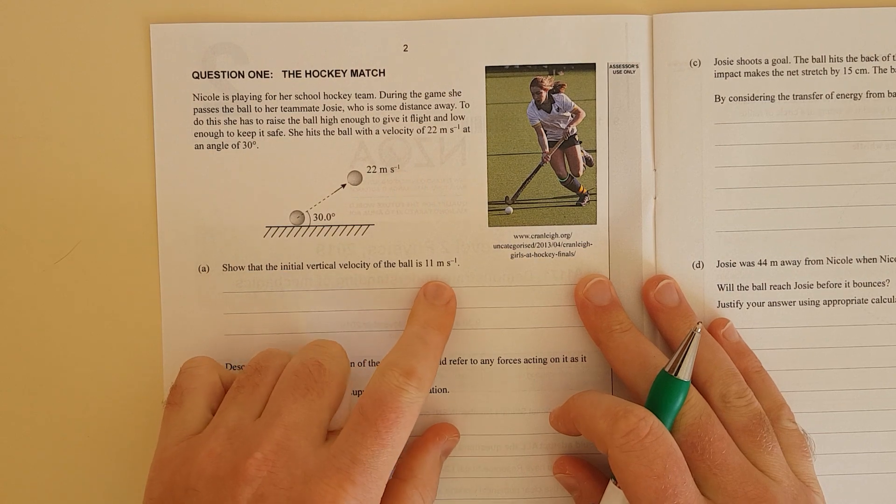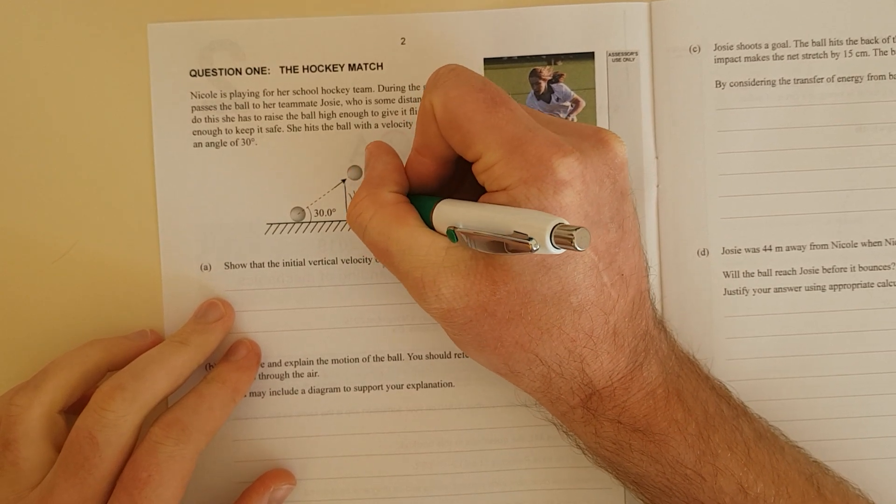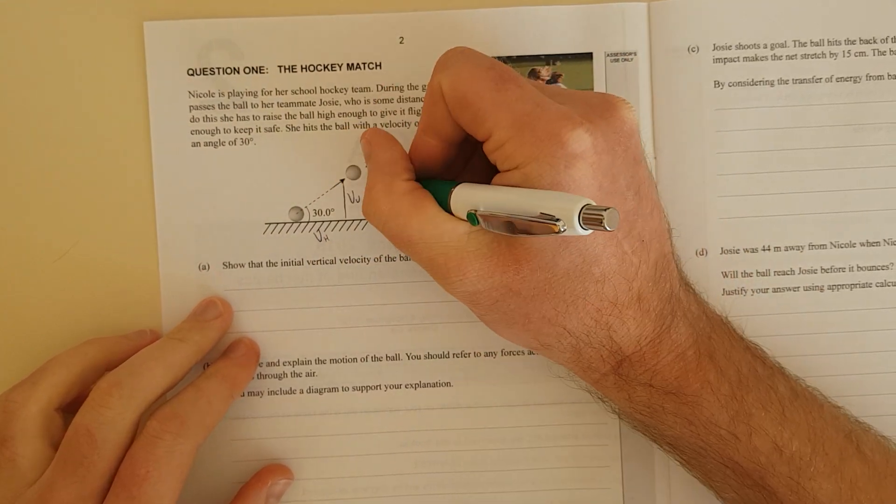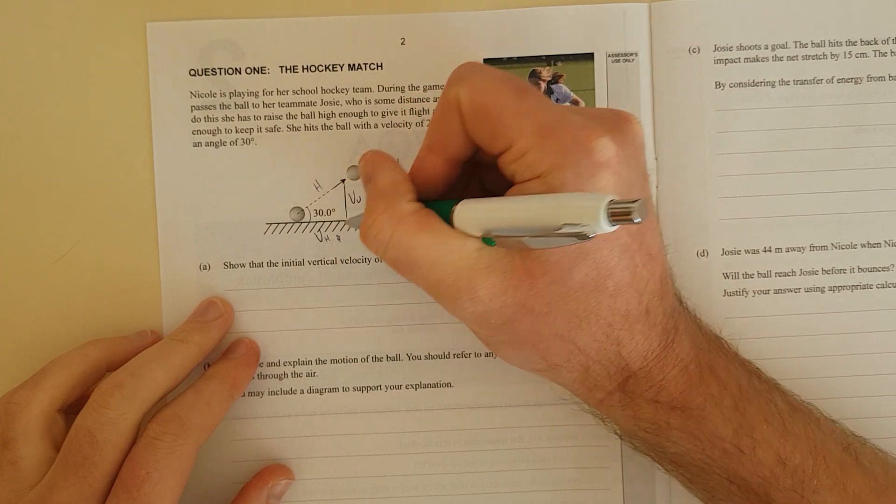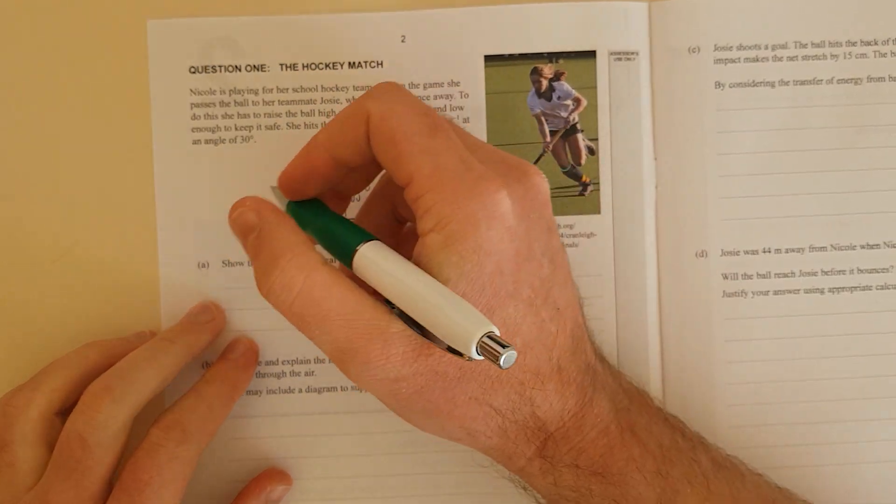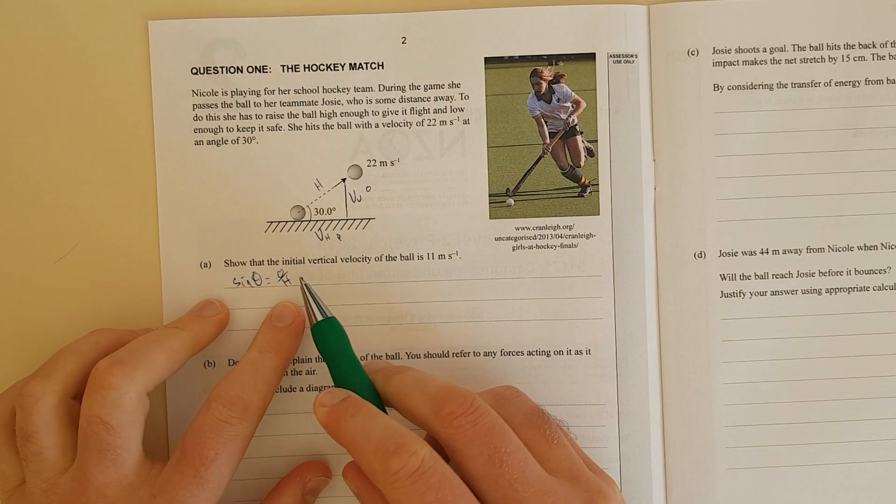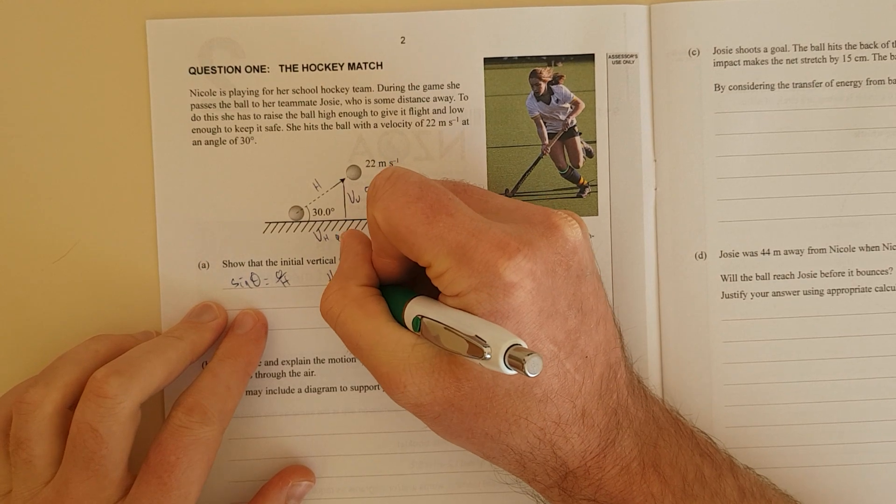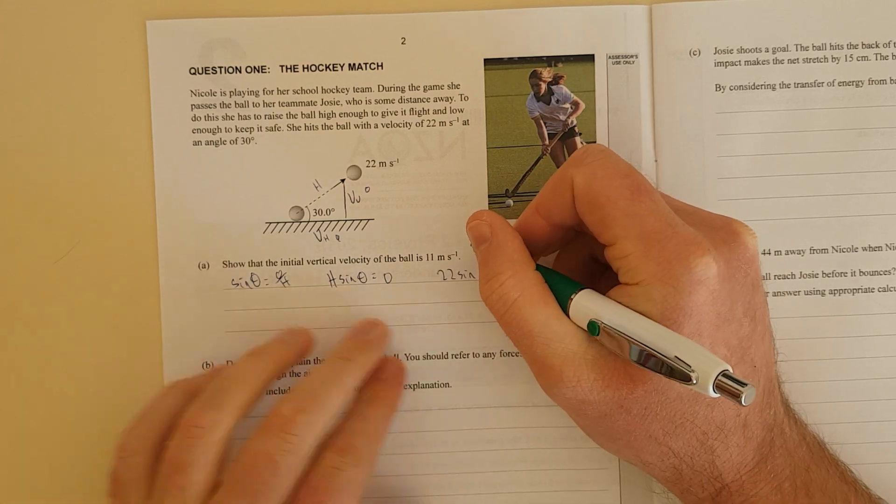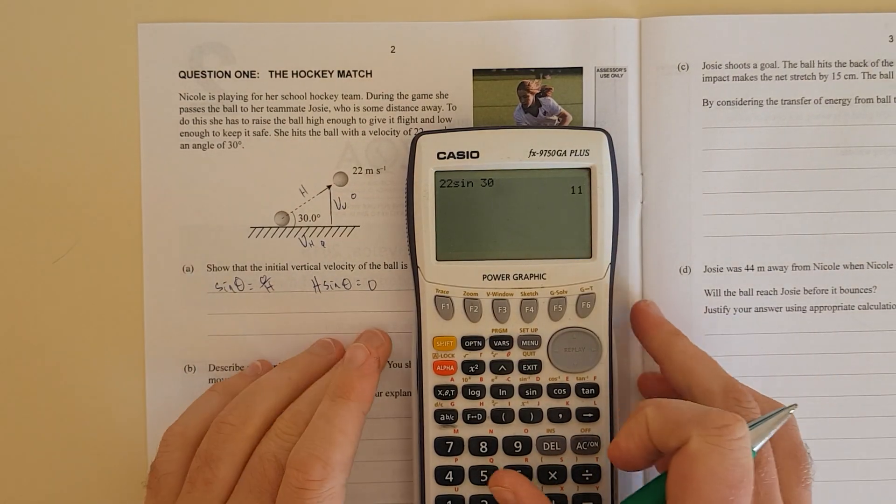Show that the initial vertical velocity of the ball is 11 meters per second. So we're going to draw the rest of our triangle - this is the vertical component, this is the horizontal component. We're trying to find the opposite, we've got the hypotenuse, so sine theta equals the opposite over the hypotenuse. So 22 sine 30 equals exactly 11 meters per second.